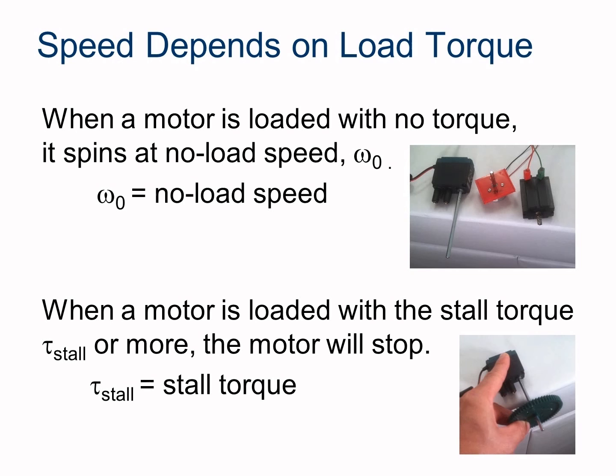Speed depends on the load torque. When you just have a little motor and you hook up a power source to it and start to spin it, there's no load on that. That's going to spin at its highest RPM, or its highest angular velocity, which we use the omega symbol for. We're going to refer to that as omega-0, the speed that it spins at when there's no load. This is its angular velocity.